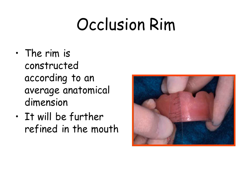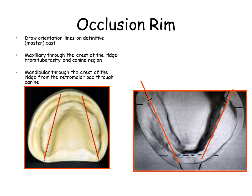The rim is constructed according to an average anatomic dimension and will be further refined in the mouth. The dimensions given are estimates of the average lip length, approximately 22 mm from the depth of the labial vestibule to the incisal edge of the rim. To begin, draw orientation lines on the definitive master cast. On the maxillary, draw through the crest of the ridge from the tuberosity and canine region. On the mandibular, draw through the crest of the ridge from the retromolar pad through the canine, as seen in the diagram. The lines extend to the land area.